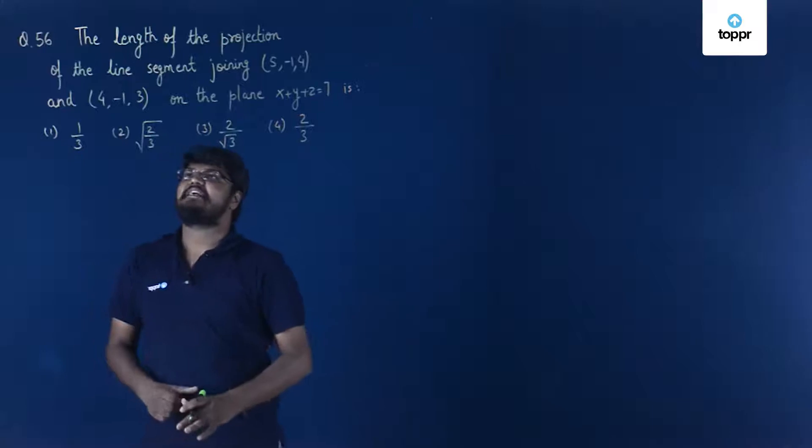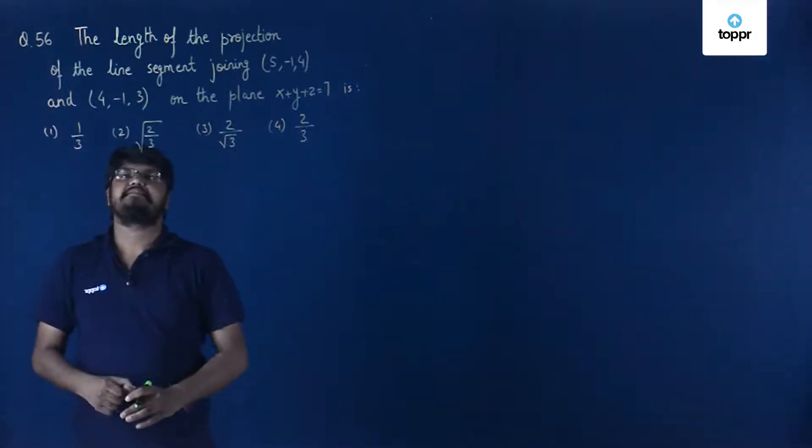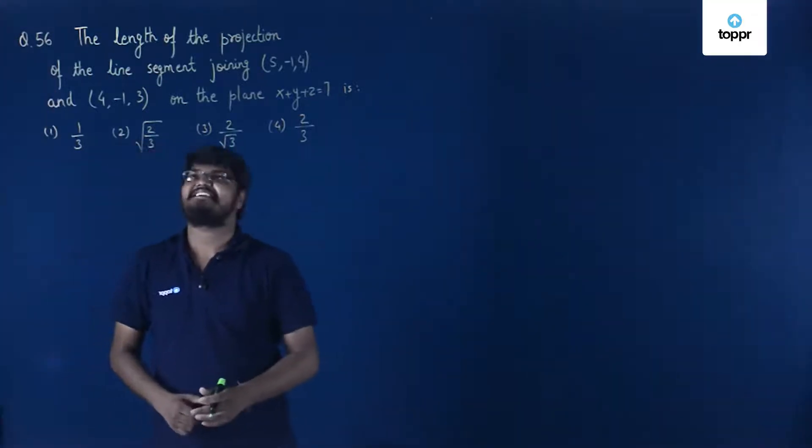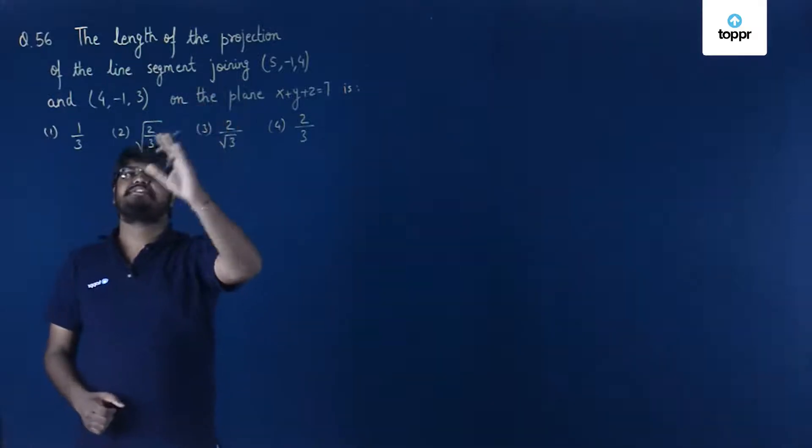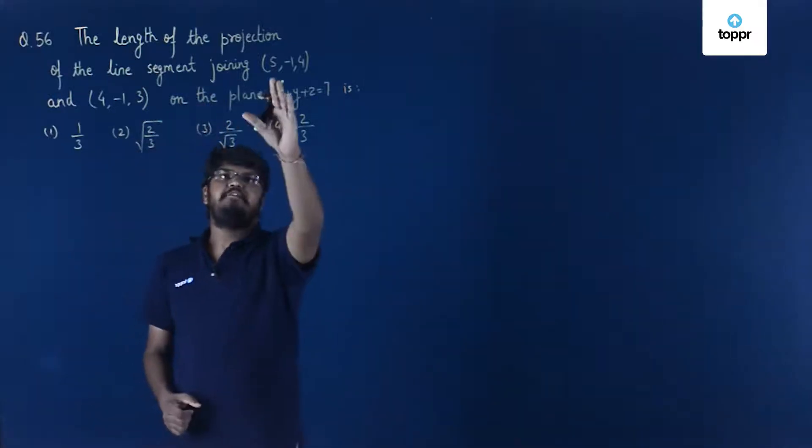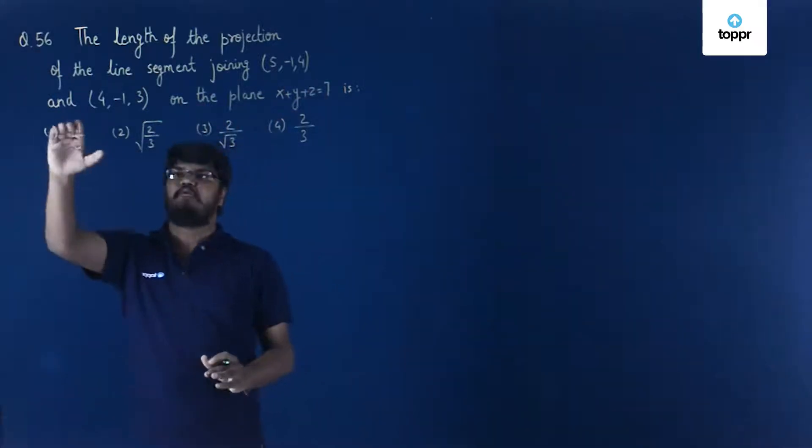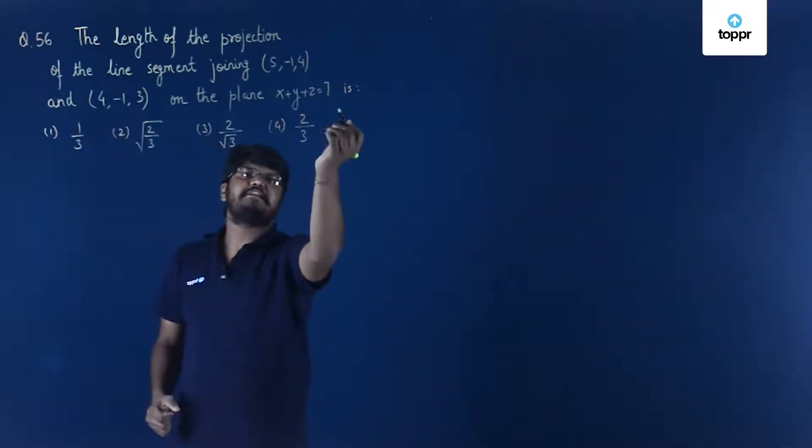Hey everyone, let us now take a look at question number 56 of set B of JEE Mains 2018. The question is: the length of the projection of the line segment joining (5, -1, 4) and (4, -1, 3) on the plane x + y + z = 7 is.